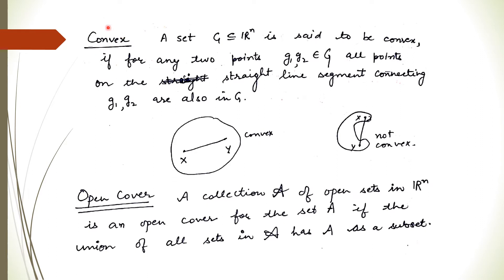The next definition is convex. We take G as a subset of R^n. This set G is said to be convex if, for any two points from G, all points lying on the straight line segment joining those points also lie in G itself. An example of a non-convex set: if you take points X and Y and join a straight line segment, some points on that segment lie outside G. So whenever we have a hole or a cut, those sets are not convex.